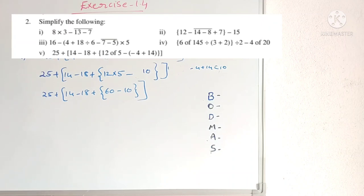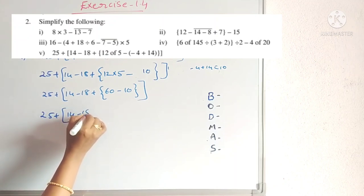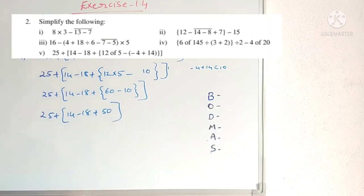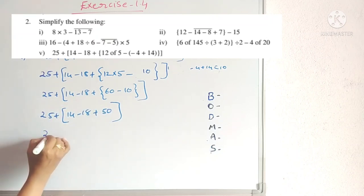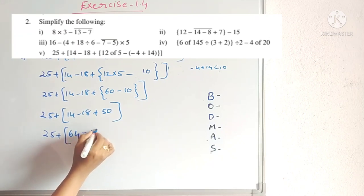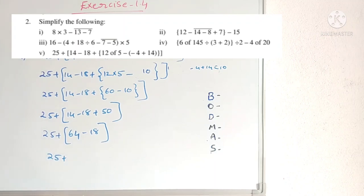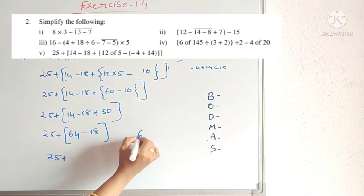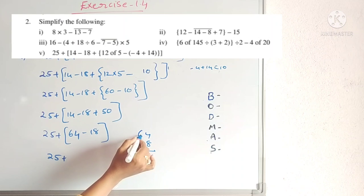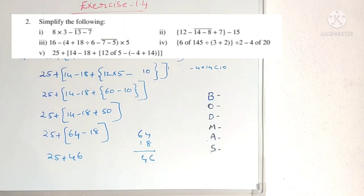So now we have 25 + 14 − 18 + 50. Addition and subtraction are there. Do addition first. Positive numbers: 25 + 14 + 50 = 89. Then 89 − 18 = 71. Wait — let me recalculate: 50 + 14 = 64, then 64 − 18 = 46, then 25 + 46 = 71.